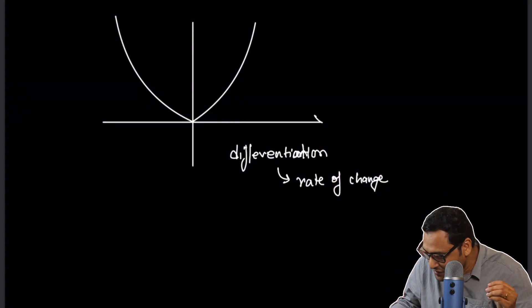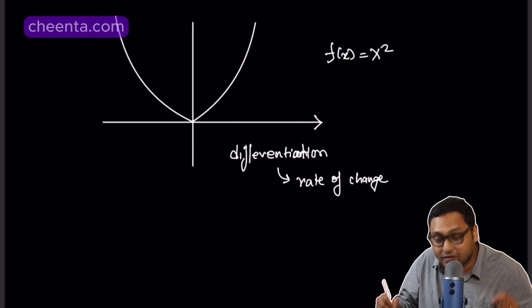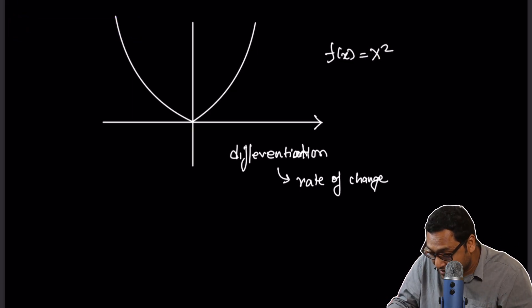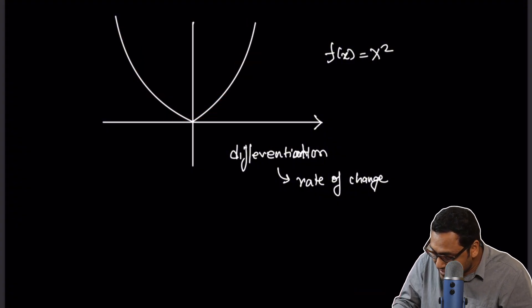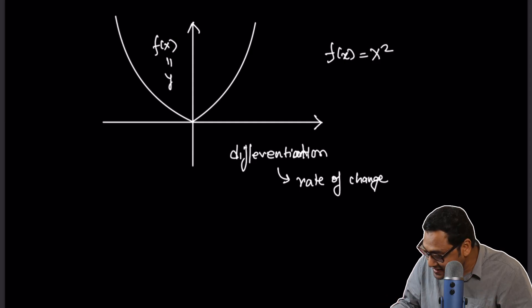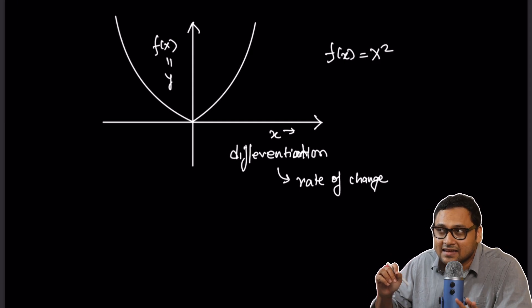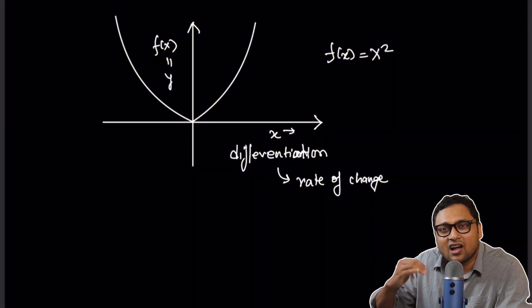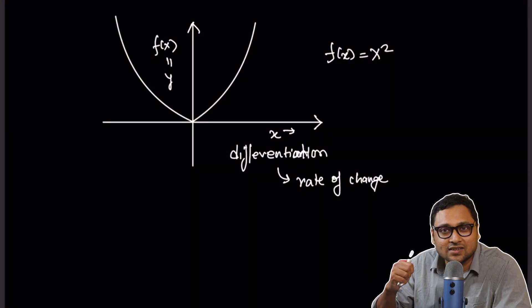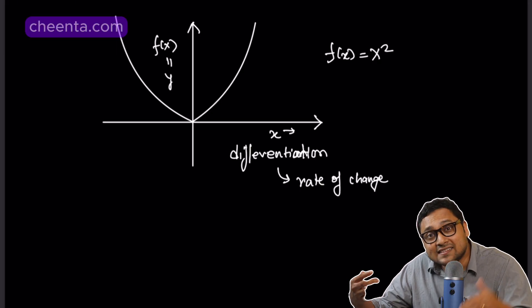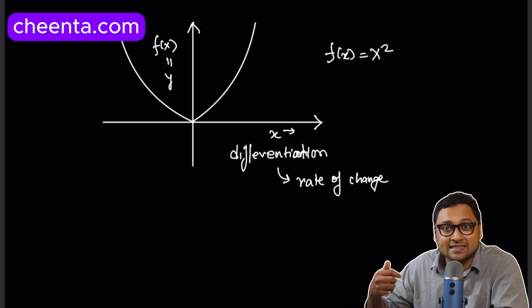So every function, let's say f(x) equals x squared. So if we draw that function, it will look like a parabola. Probably you know this. Then this is the f(x) or y coordinate, y axis. And this is the x axis. One way to think about it is that if you change x, how fast y is changing.